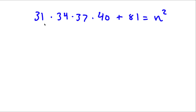So I have 31 times 34 times 37 times 40, plus 81, equals n squared. Make sure to stick until the end of the video where I have a bonus problem similar to this one which you guys can try to solve.